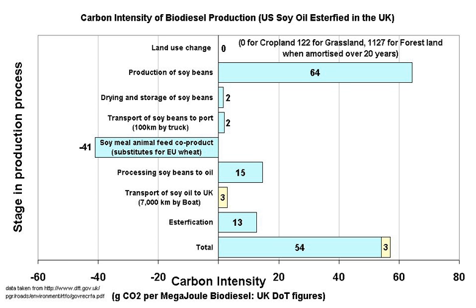The environmental impact of biodiesel is diverse. An often mentioned incentive for using biodiesel is its capacity to lower greenhouse gas emissions compared to those of fossil fuels. Whether this is true or not depends on many factors. A general critic to biodiesel is the land use change, which has potential to cause even more emissions than would be caused by using fossil fuels alone. Yet this problem would be fixed with algal biofuel, which can use land unsuitable for agriculture.